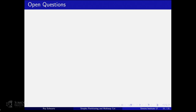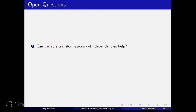Two interesting open questions remain. First, can transformations with dependencies help with other problems? The technique of transforming the solution is used in many problems, and global transformations might give better or simpler results. Second, what is the best cut density achievable for the k-dimensional simplex? We know it's at least 1.2 and at most 1.296-something. Thank you.